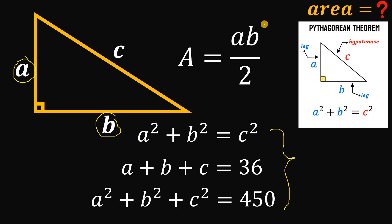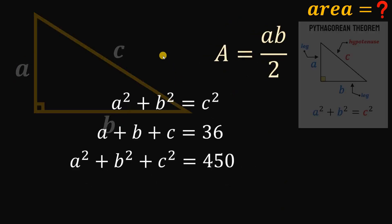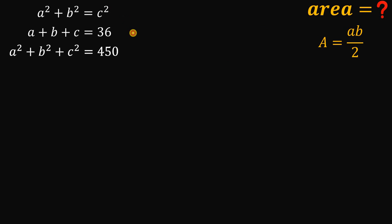Using these three equations, our goal now is to find the value of AB over 2. Let's convert this geometry question into an algebra question. Take note that A, B, and C are all positive real numbers because they are the side lengths of a right triangle.